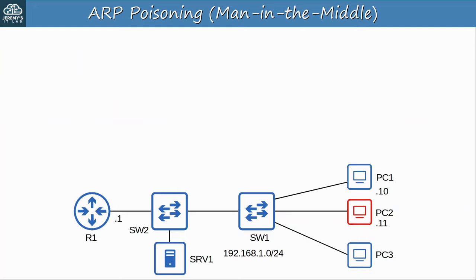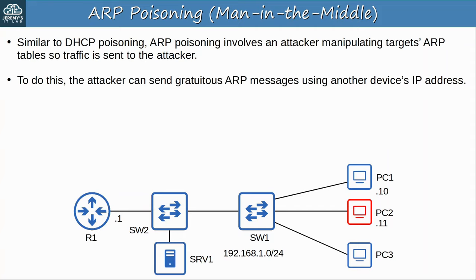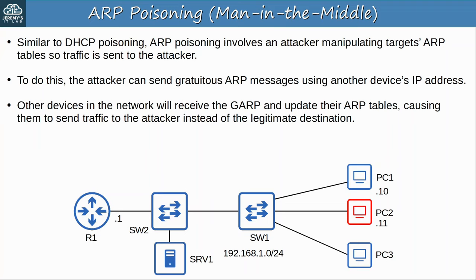This is the ARP poisoning attack, which I briefly mentioned in a previous video. Similar to DHCP poisoning, ARP poisoning involves an attacker manipulating targets' ARP tables so traffic is sent to the attacker. To do this, the attacker can send gratuitous ARP messages using another device's IP address, or send replies to the target's legitimate ARP request messages. Other devices will receive the gratuitous ARP and update their ARP tables, causing them to send traffic to the attacker instead of the legitimate destination.